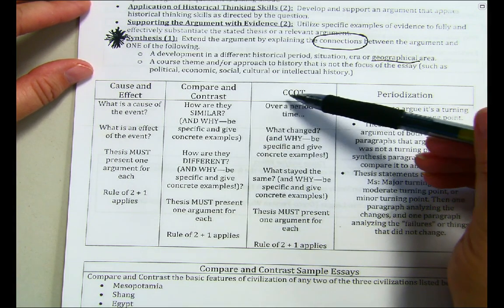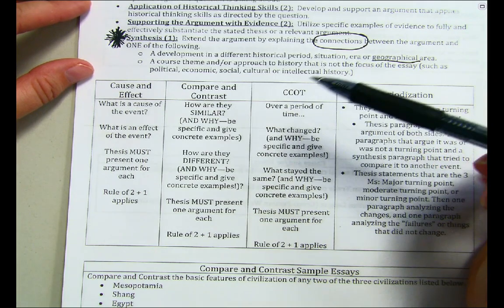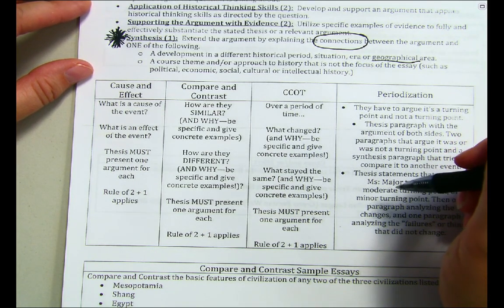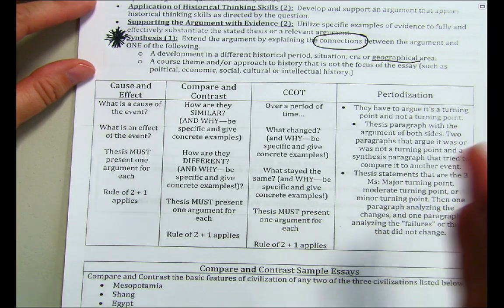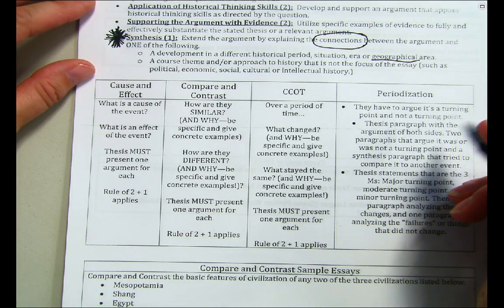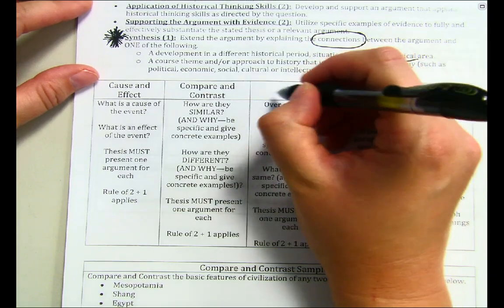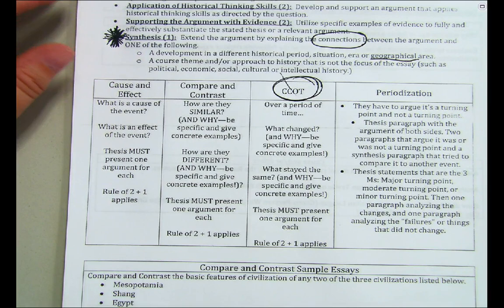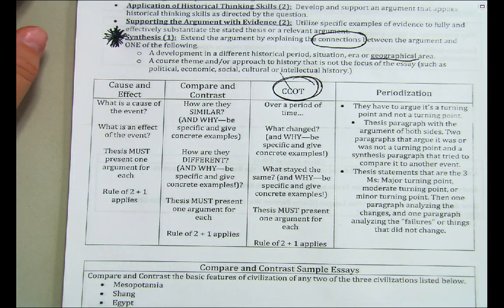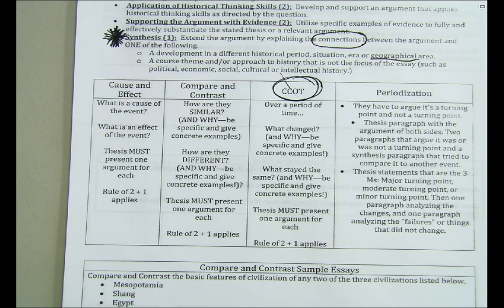Then there's a new one you haven't seen: CCOT, or continuity and changes over time. That looks at the entire period—all of Period 2. What stayed the same? What changed? Continuity is the hardest—it is by far the hardest. This one is the one you definitely don't want on AP Day, but we're going to practice the hell out of it. They haven't had a CCOT LEQ in about two years, so I'm assuming it's a CCOT on your LEQ this year.